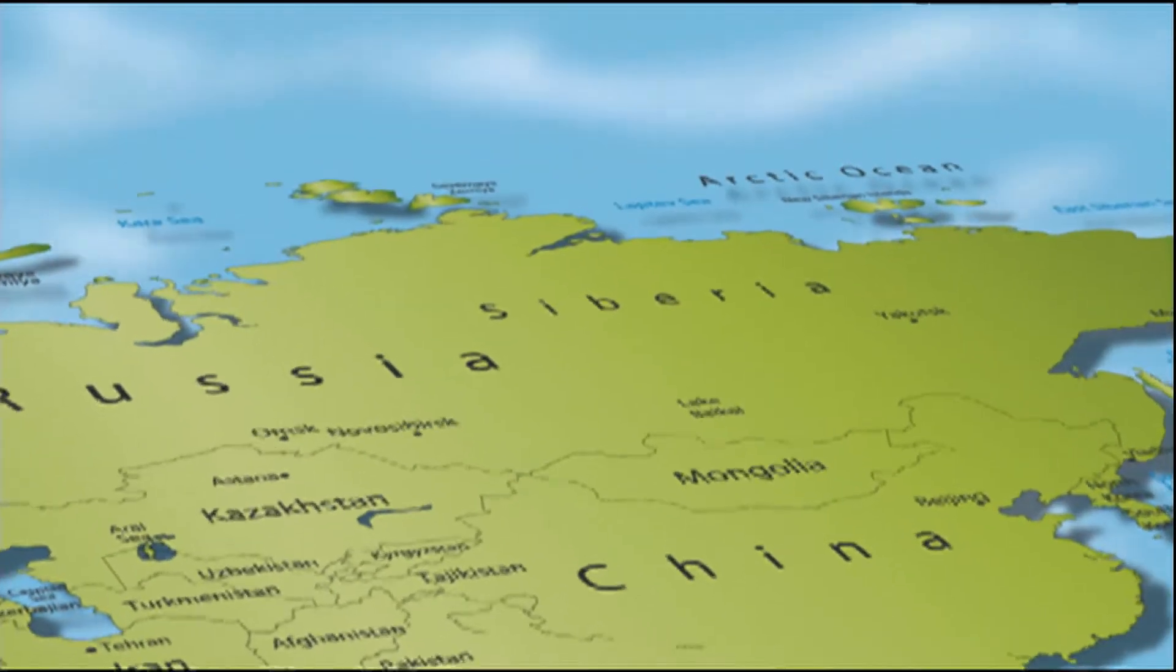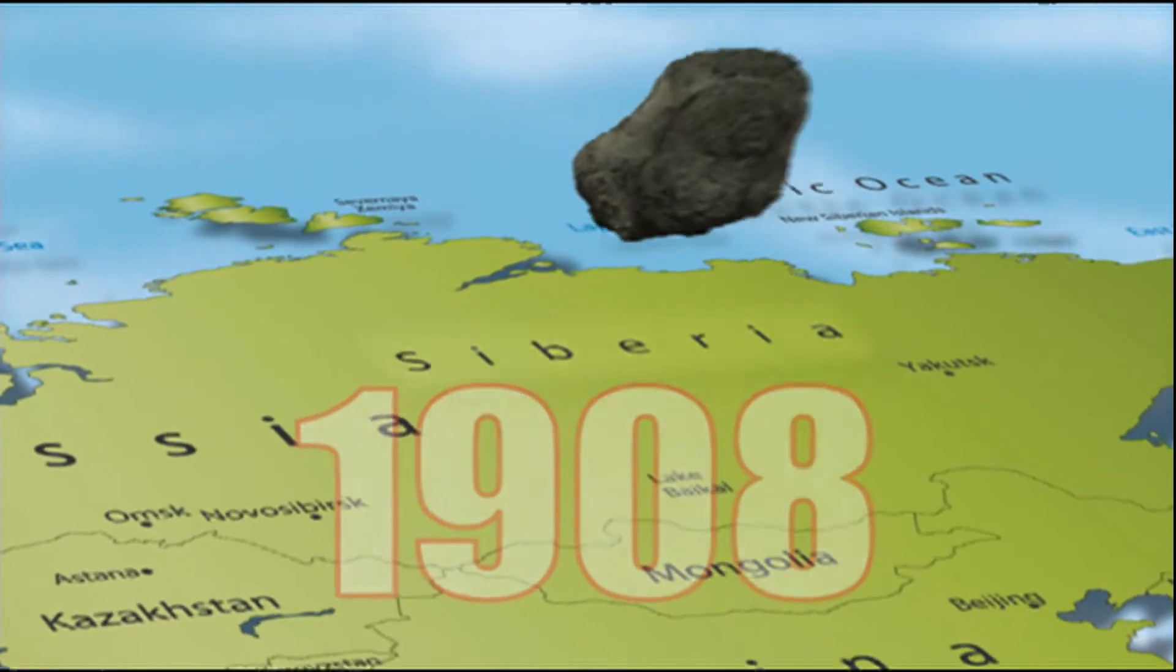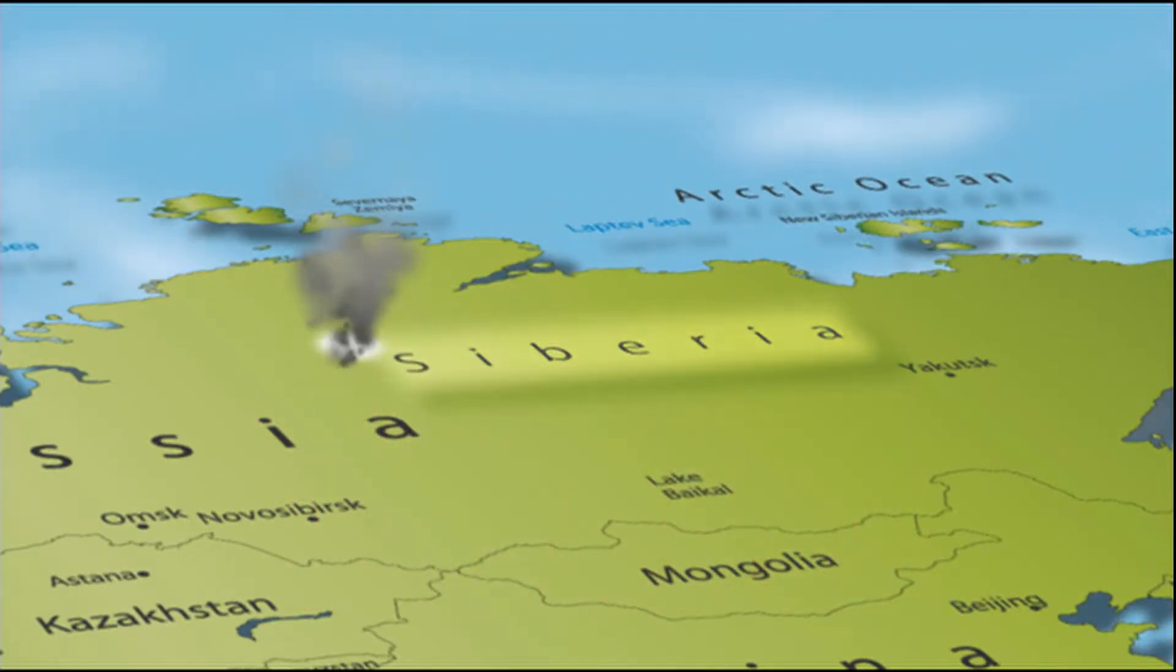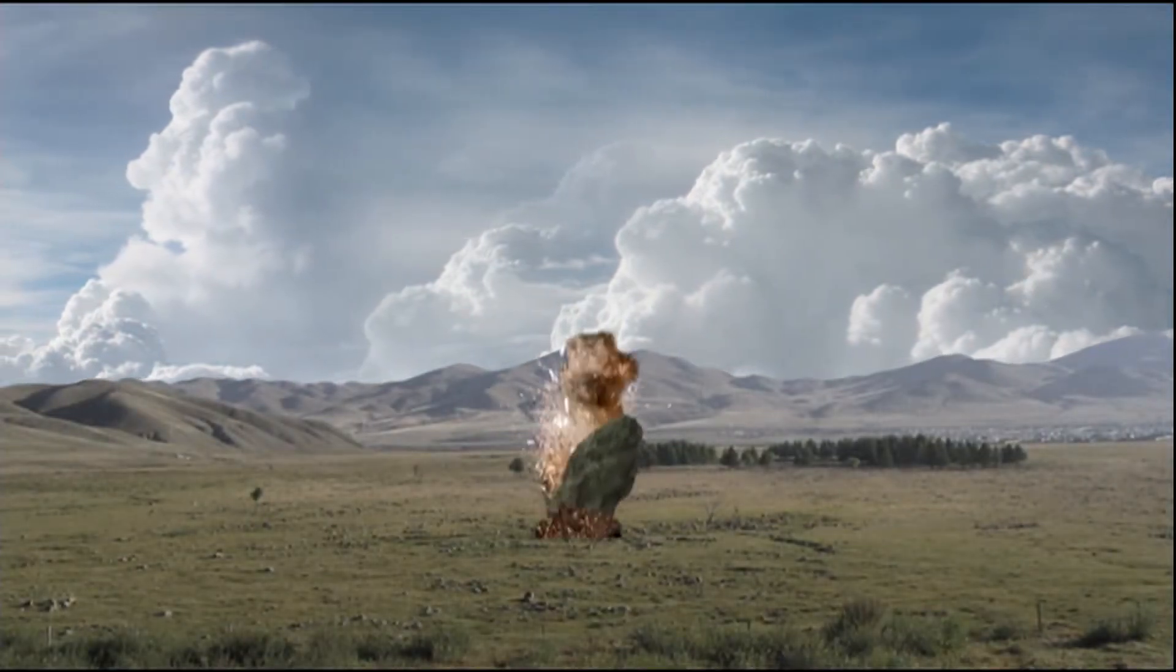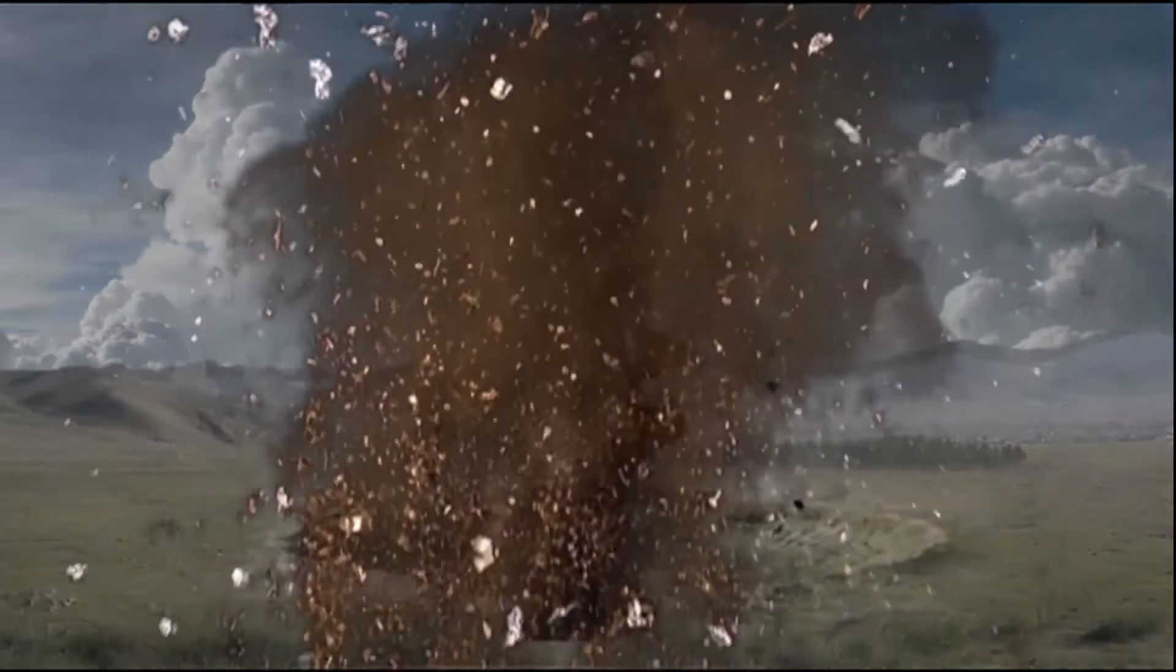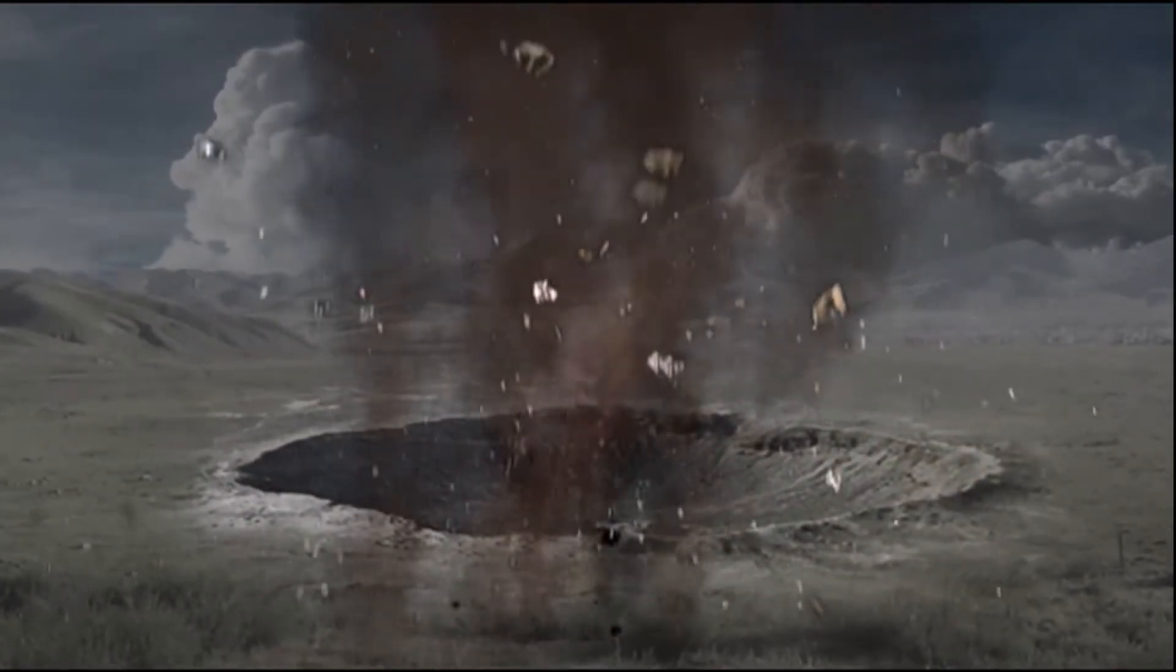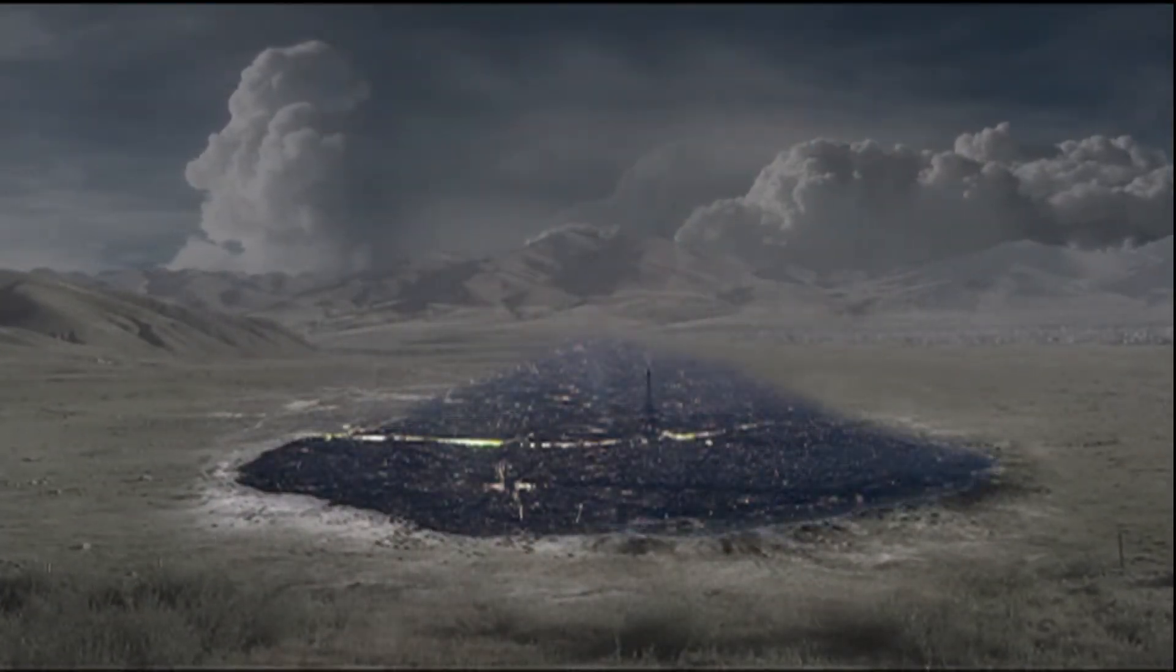Asteroids have hit Earth before. In 1908, one fell over Siberia. The power of its explosion was about 10 megatons, as powerful as the world's biggest nuclear weapon. It flattened 2,500 square kilometers of land. That's the size of Paris.